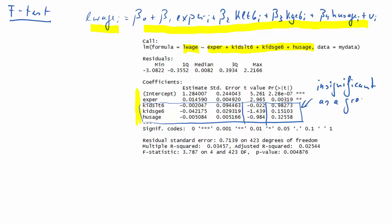And we may ask the question whether as a whole group these variables are indeed insignificant. In other words, we want to test the null hypothesis that beta 2, beta 3, and beta 4 are equal to 0. The alternative will be that at least one of them is unequal to 0.